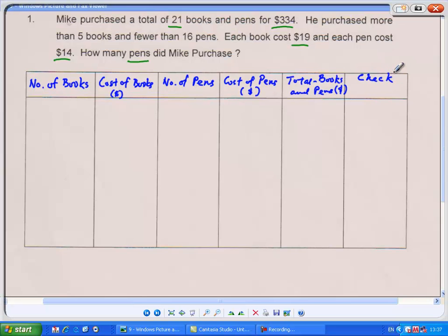How do we know we have gotten the correct answer? When the total cost is $334. Since he bought a total of 21 books and pens, let's guess somewhere in the middle. That's always the best place to start.